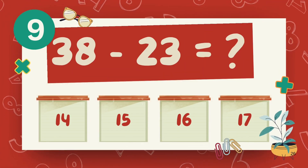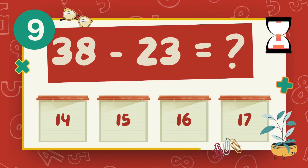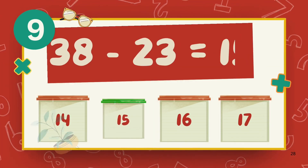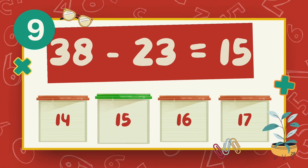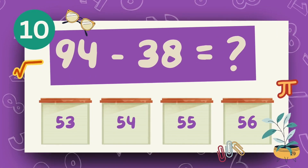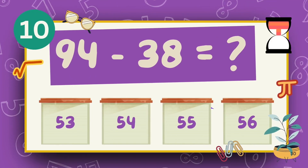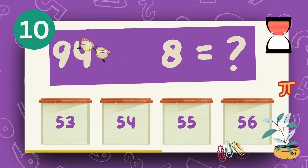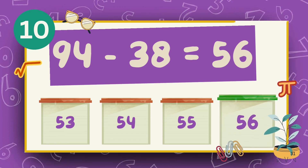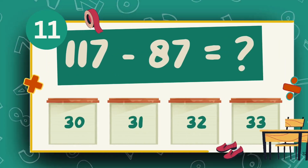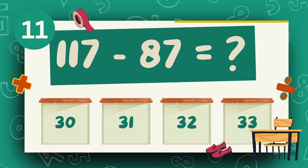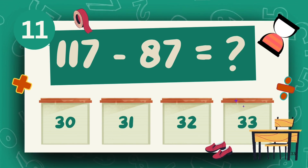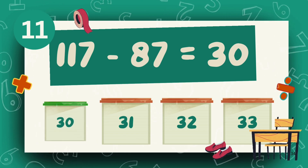What is 38 minus 23? The answer is 15. What is 94 minus 38? The answer is 56. What is 117 minus 87? The answer is 30.